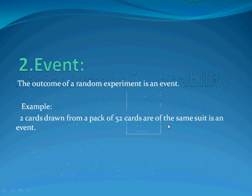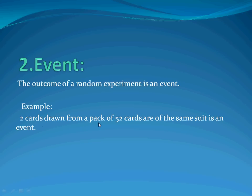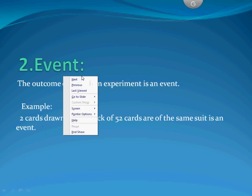Next is the event. What is an event? The outcome of a random experiment is an event. For example, 2 cards drawn from a pack of 52 cards being of the same suit is an event. Also, if we toss a coin and get a head, that is also an event.